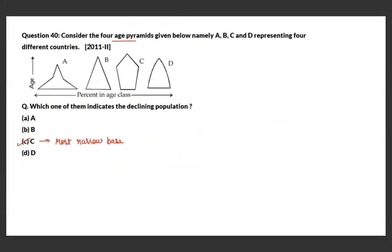Four age pyramids A, B, C, and D represent four different countries. The question asks which indicates a declining population. A declining population would have very few births. Pyramid C shows the narrowest base and increasing share of elderly dependents, making it the one showing a declining population.